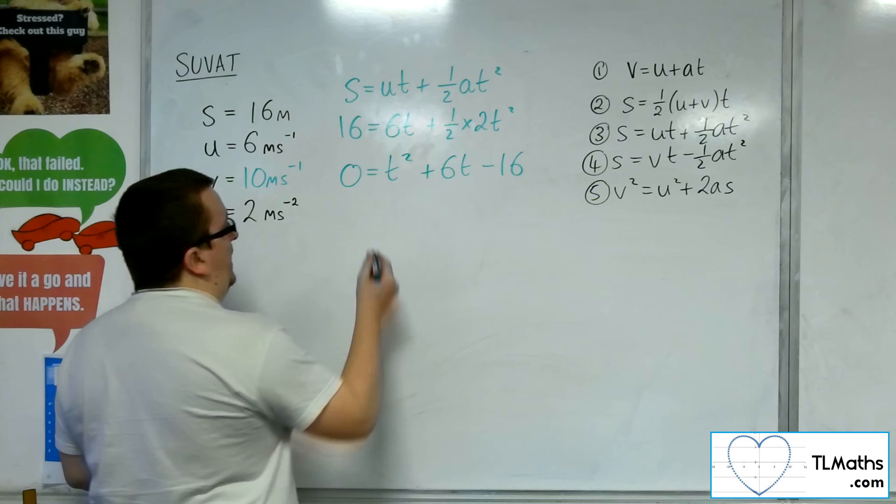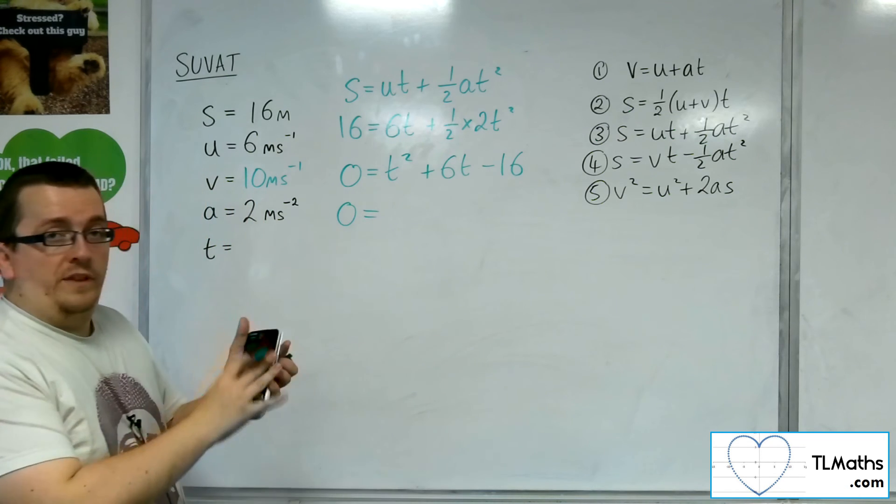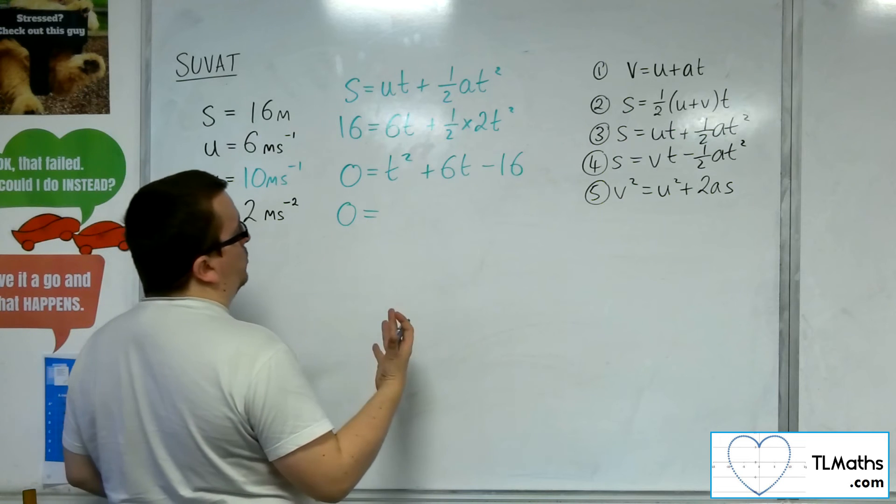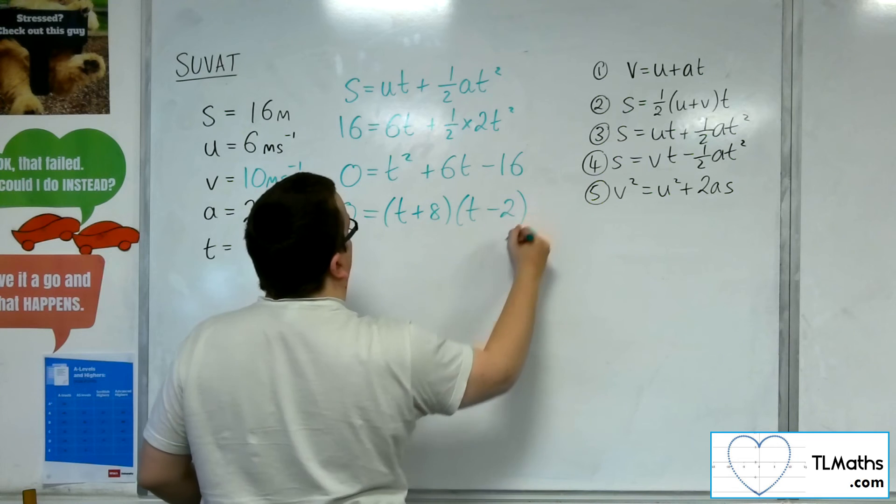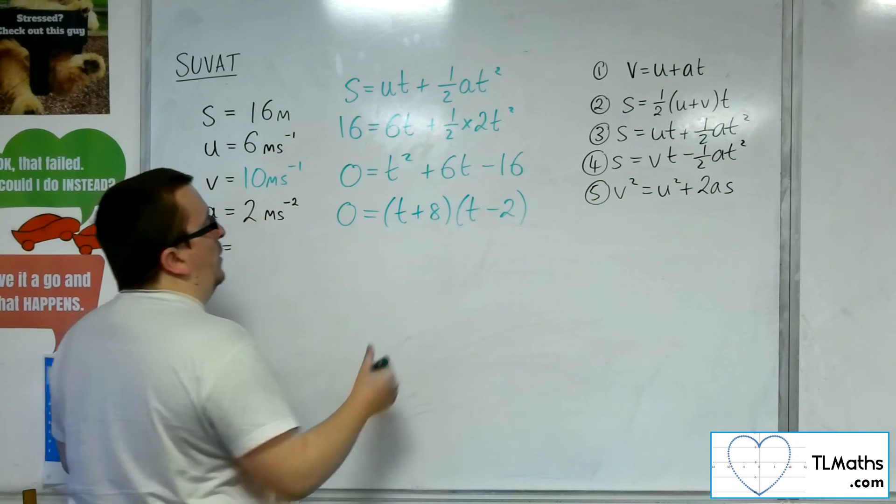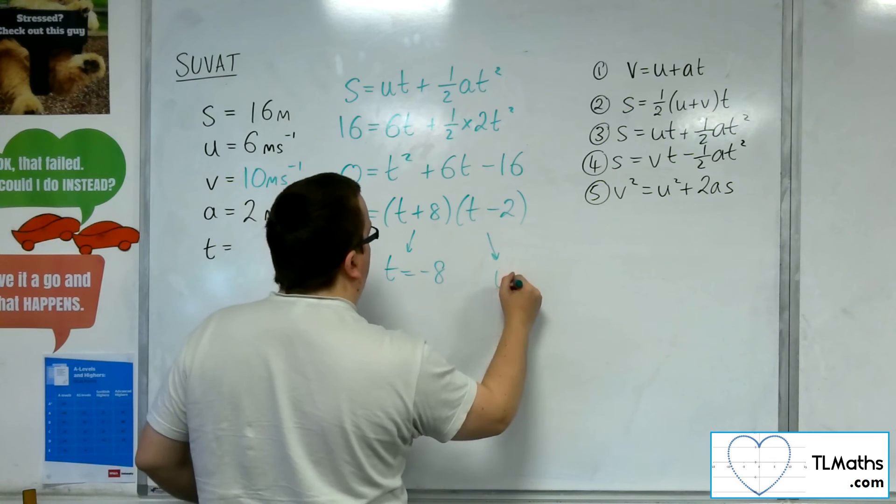Now, this quadratic in t actually factorizes, or if you weren't too sure, then go straight to your calculator's quadratic solver. And then I've got t plus 8 times t minus 2. So either t is minus 8 or t is 2.